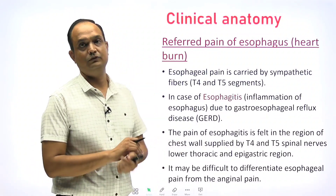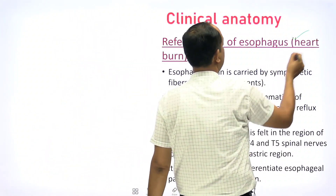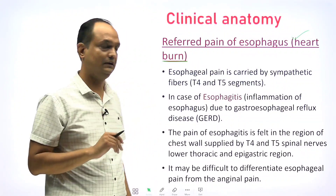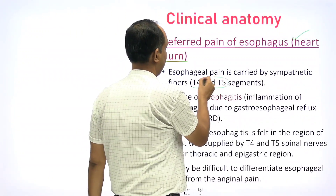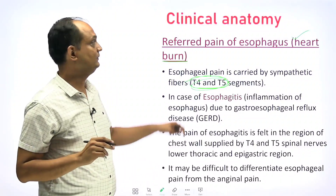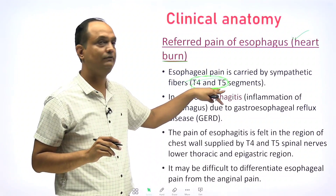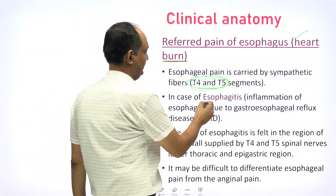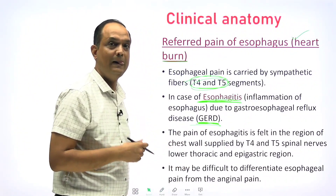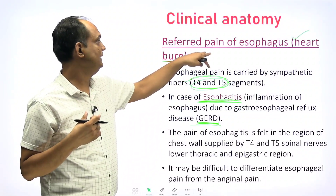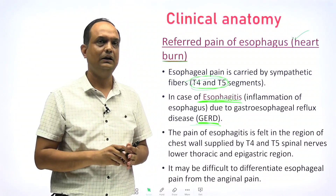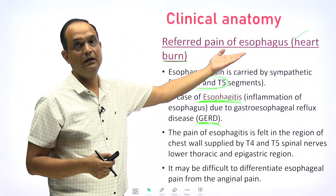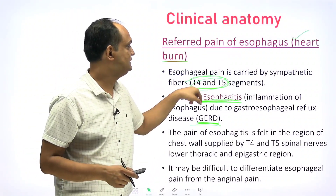The second topic is referred pain of the esophagus. The common term is 'heartburn.' This occurs because of a shared nerve supply — the nerve supply comes from the T4 and T5 segments, which also carry supply from the heart. So esophageal pain is carried by sympathetic fibers of T4 and T5. In esophagitis — commonly due to acid reflux — the patient experiences burning that is referred to as heartburn. It is actually pain or burning of the esophagus referred to the heart region.